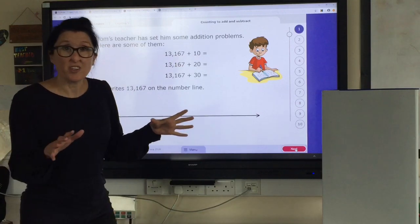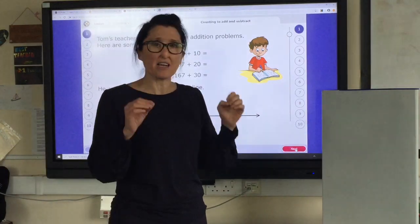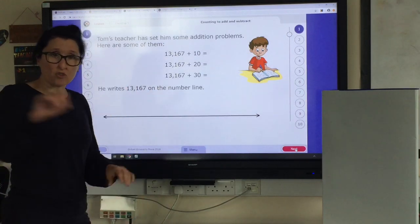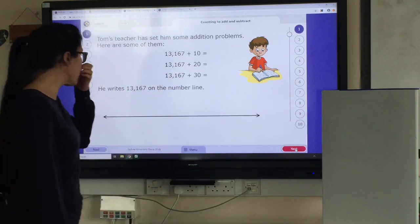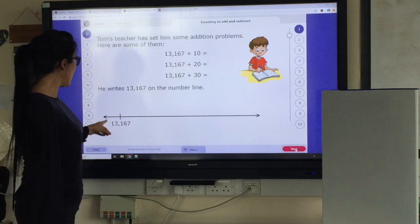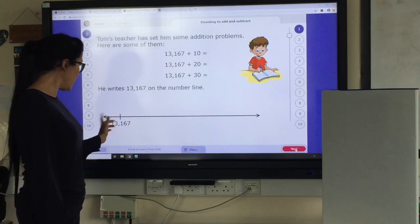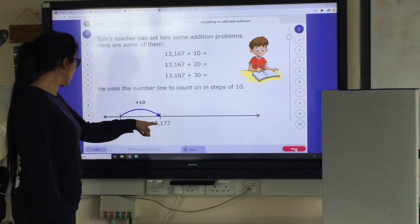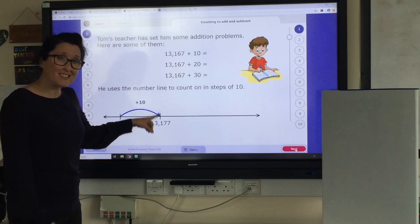Number lines, I always tell you this, are the best resource that you can use in maths because you can use one at any time, wherever you are. Just draw a number line. So if we start off at 13,167 and we need to add on 10, we're going to do a jump of 10 and we'll end up at 13,177.